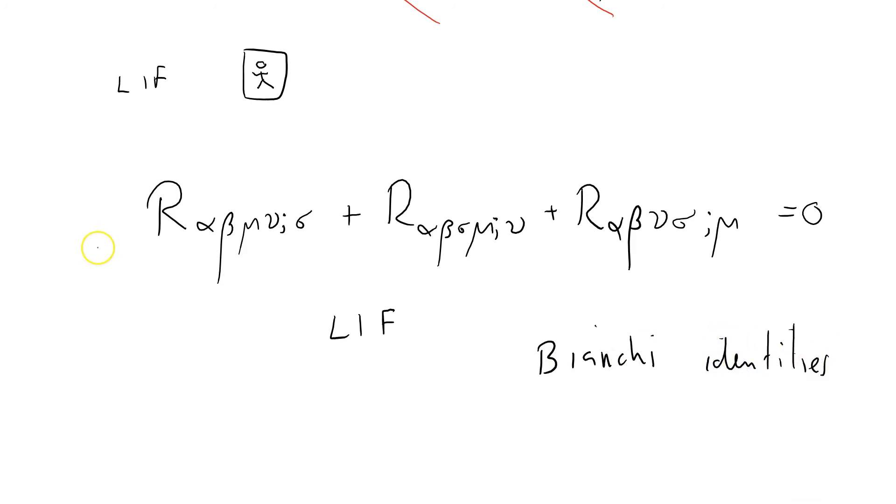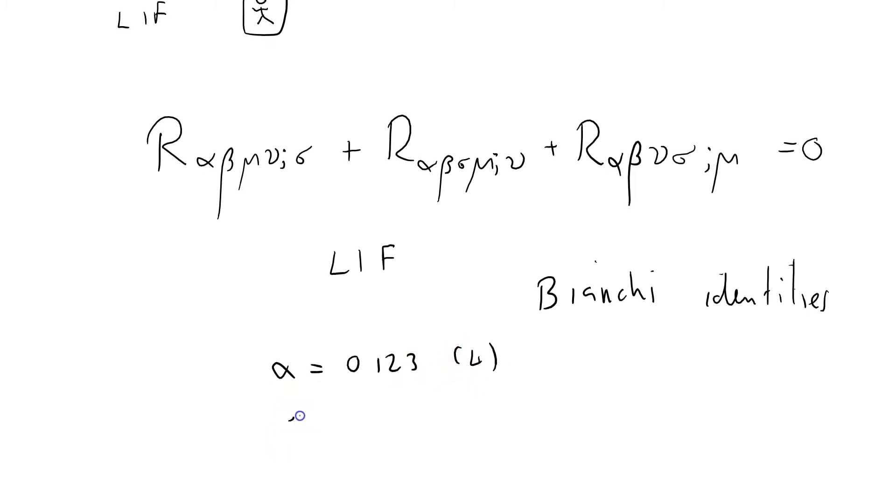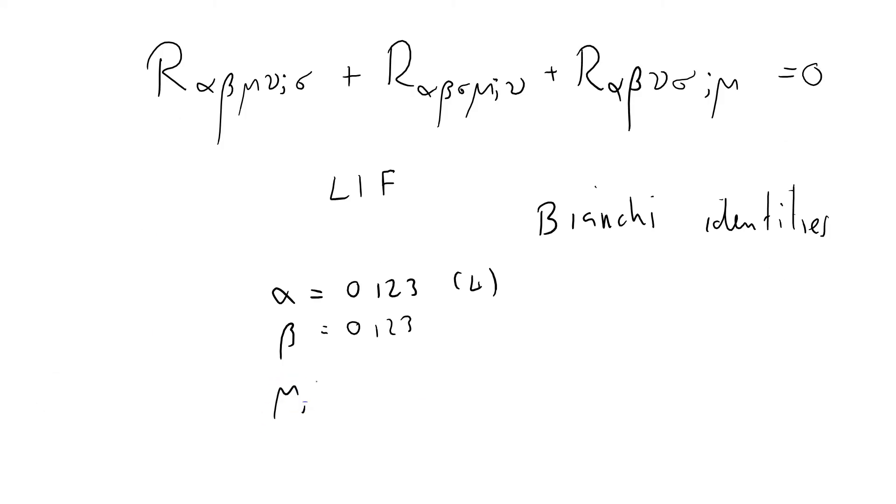Notice there's quite a lot of meat on this, because alpha equals 0, 1, 2, 3. There's four separate components for it. Beta has also got four components. That can be 0, 1, 2, or 3. And of course, mu and nu and sigma are also 0, 1, 2, or 3.